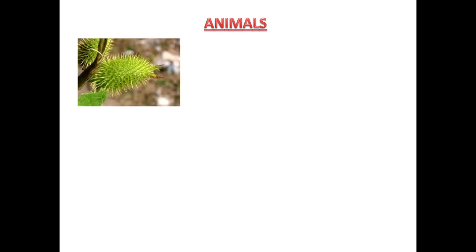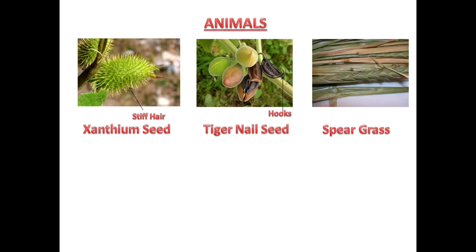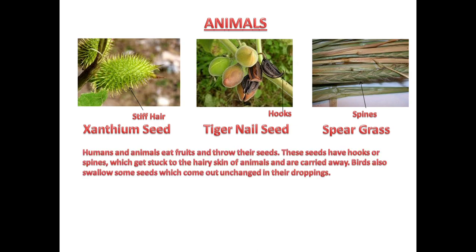Seeds dispersed by animals include xanthium seed with stiff hairs, tiger nail seed with hooks, and spear grass with spines. Sometimes humans and animals eat fruits and discard the seeds. Seeds with hooks or spines get stuck to the hairy skin of animals and are carried away. Sometimes birds swallow these seeds, which come out unchanged in their droppings.